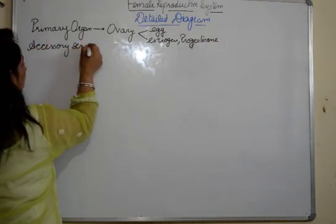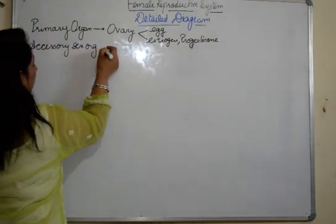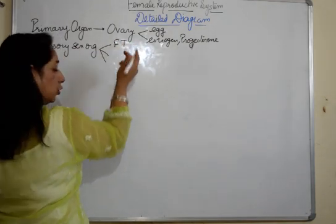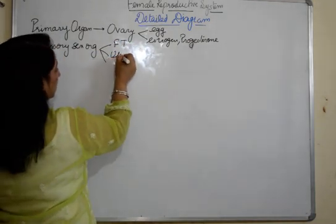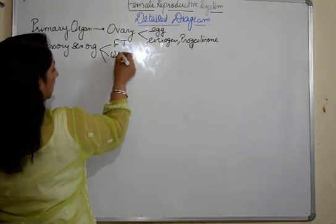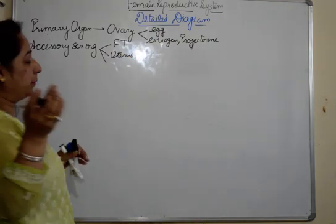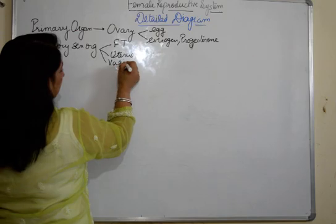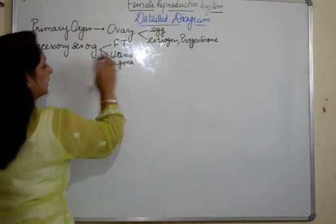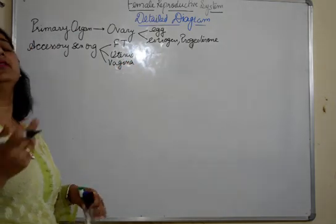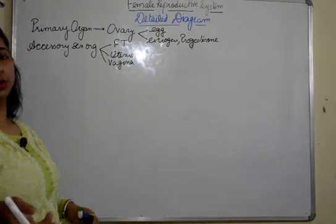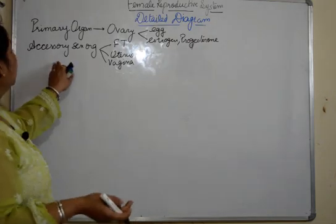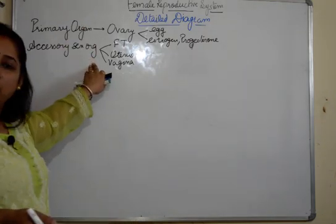We have secondary or accessory sex organs, which include fallopian tubes, uterus, and vagina as well. They are the accessory sex organs, and we have certain glands also which we will be doing in our further videos. So these are the primary and secondary sex organs.